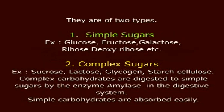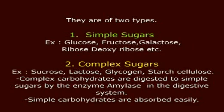Simple sugars include glucose, fructose, galactose, ribose, and deoxyribose. Complex sugars include sucrose, lactose, glycogen, starch, and cellulose. Complex carbohydrates are digested to simple sugars by the enzyme amylase in the digestive system.